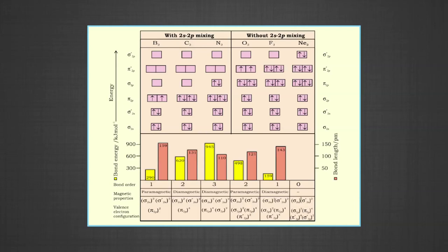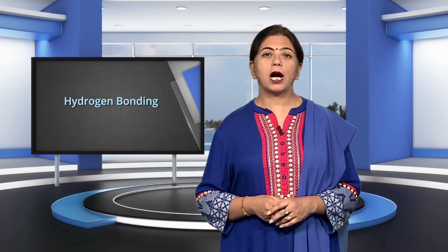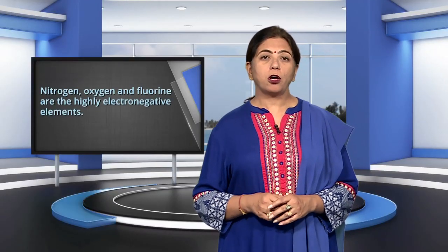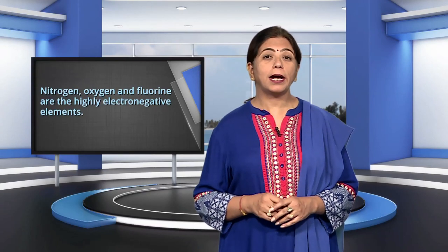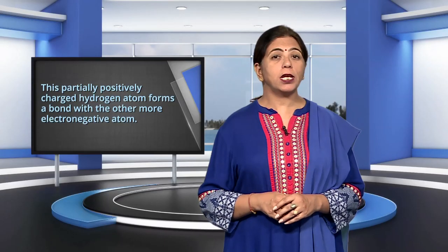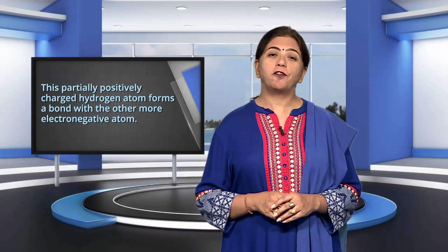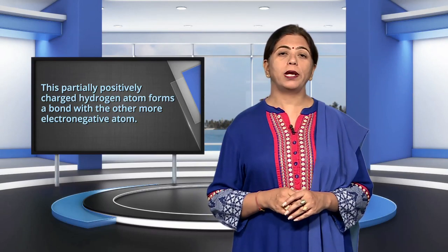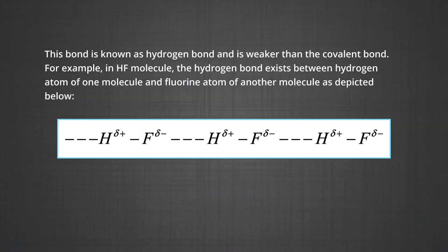Now let us discuss hydrogen bonding. Nitrogen, oxygen and fluorine are highly electronegative elements. When they are attached to a hydrogen atom to form a covalent bond, the electrons of the covalent bond are shifted towards the more electronegative atom. This partially positively charged hydrogen atom then forms a bond with another electronegative atom. This bond is known as the hydrogen bond and is weaker than the covalent bond.